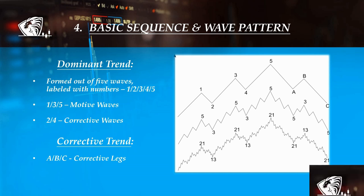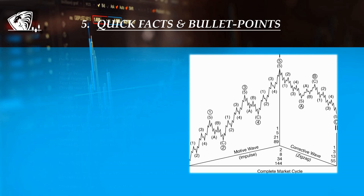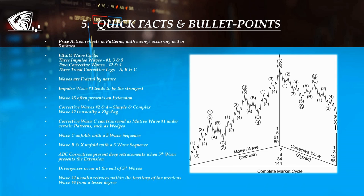Time for some facts and bullet points. Price action moves in patterns and usually has the magic number set to 3 and 5. A bullish or bearish Elliott cycle is formed out of three impulsive waves, number 1, 3 and 5, and two corrective waves, number 2 and 4.